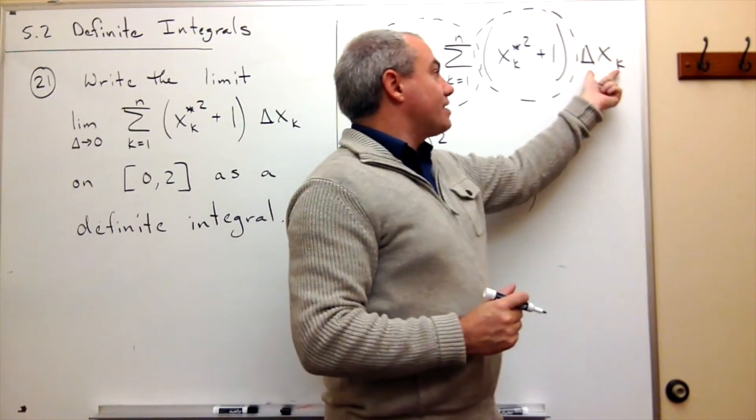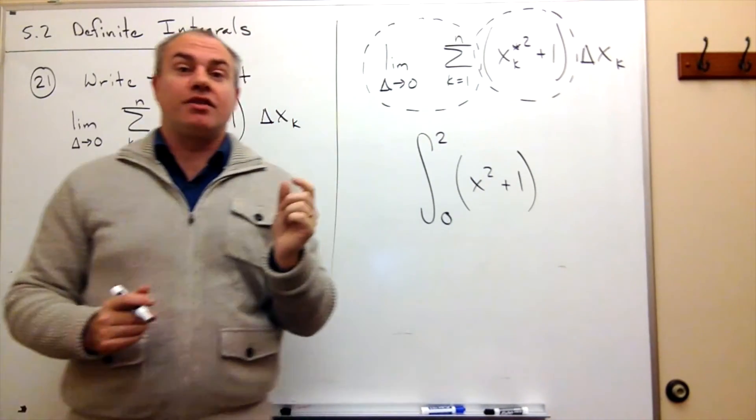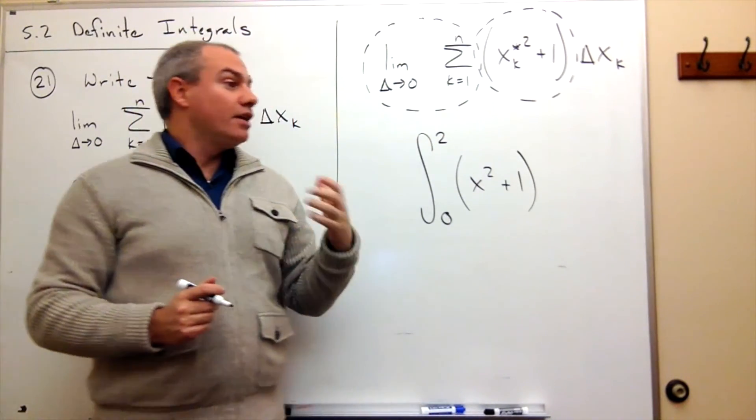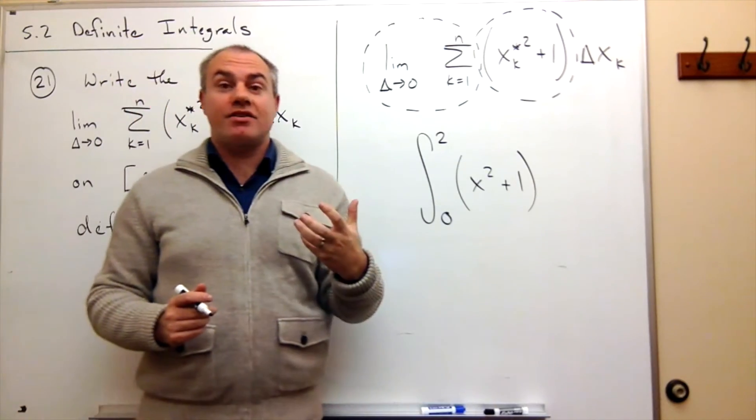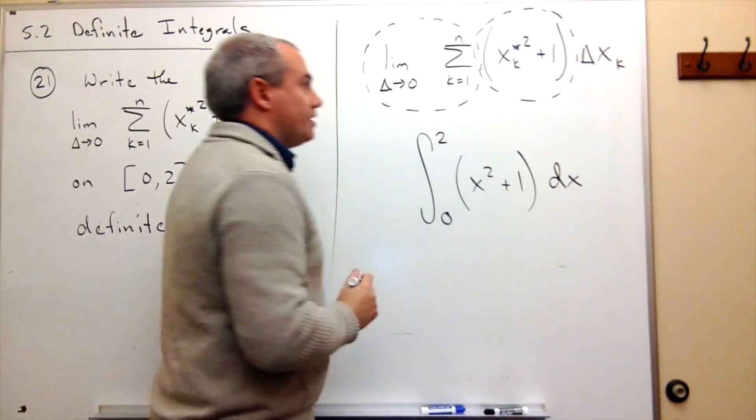Now delta x sub k is that small change in the width of each rectangle, and a small change in x is represented in our definite integral by a dx.